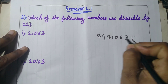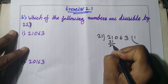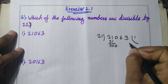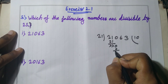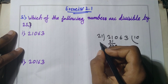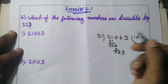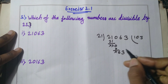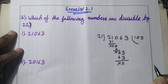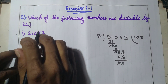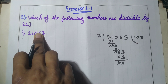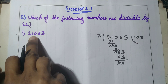21 goes in one time. The remainder is 0. Bringing down the next two digits: 0 and 63. The 0s cancel, leaving 63. 21 times 3 equals 63. The remainder is 0. So 21063 is exactly divisible by 21.